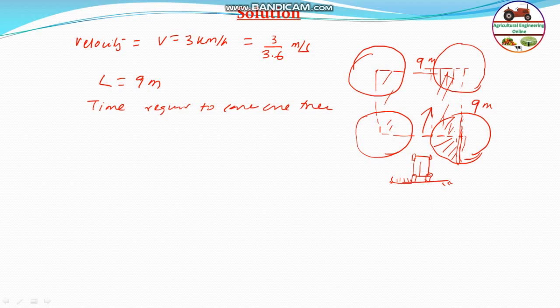The tractor is moving forward, so the time required T = L/V = 9 meter divided by 3/3.6, which equals 10.8 seconds. This is 10.8 seconds you will take for covering one side - that means one side this way and one side this way.